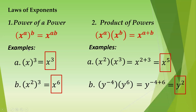Remember the difference between the two: when you have a variable with a power raised to another power, you multiply the powers — a times b. But when you have multiplication of two powers of the same variable, you just add their exponents — x raised to a plus b.